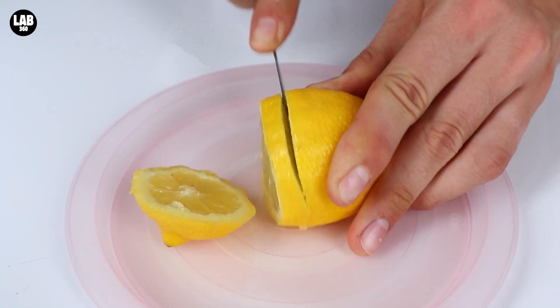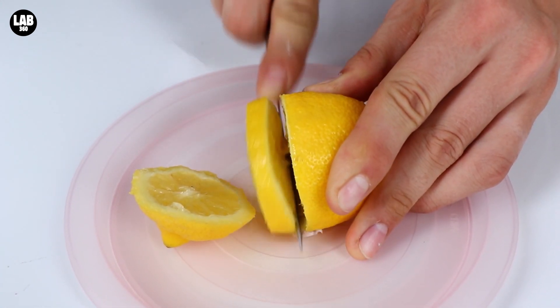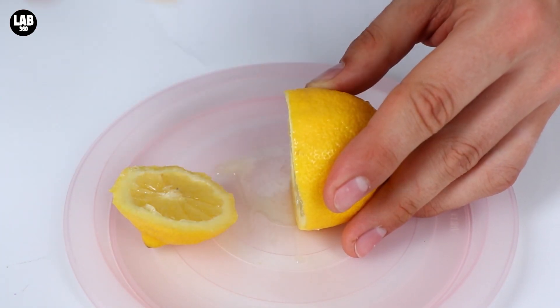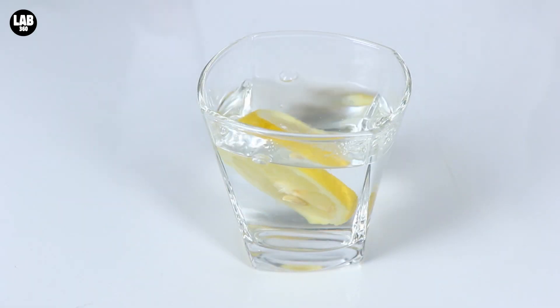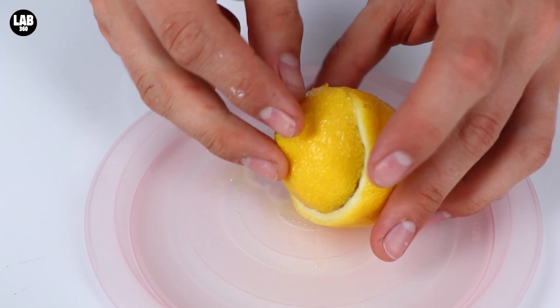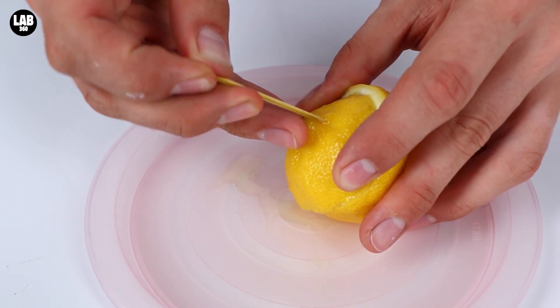Number seven. The lemon saver. It's always nice to slice a piece of lemon and add it to a drink. But if you use a toothpick to stick the leftover pieces of lemon together, they'll stay fresh for much longer.